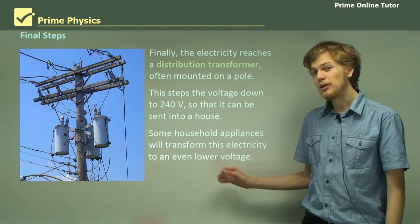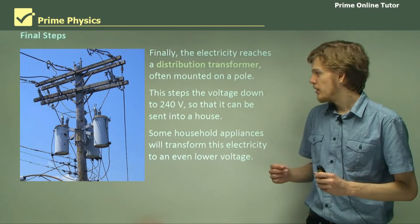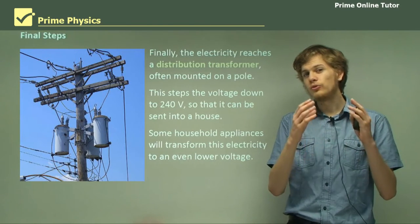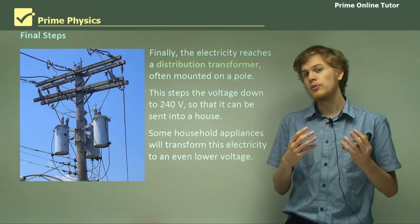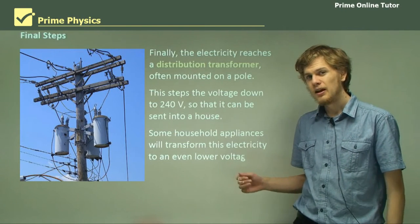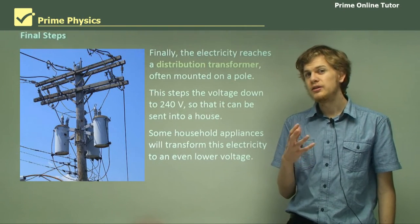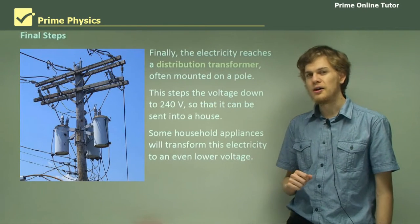Some household appliances will contain their own transformers that will turn this 240 volt alternating current into a current of the appropriate voltage for the appliance. And this of course is why we don't change it into DC before sending it into the house.